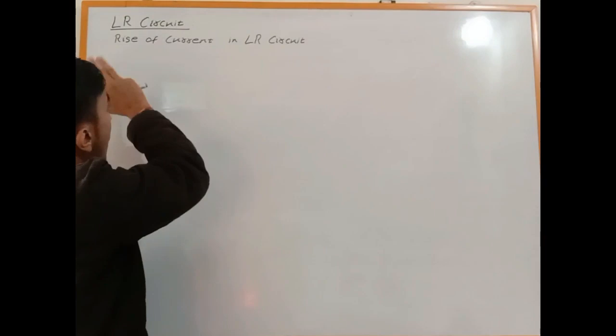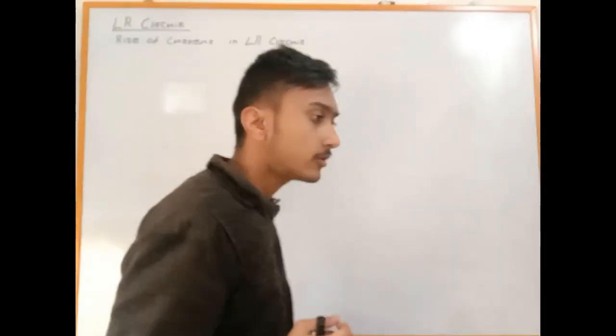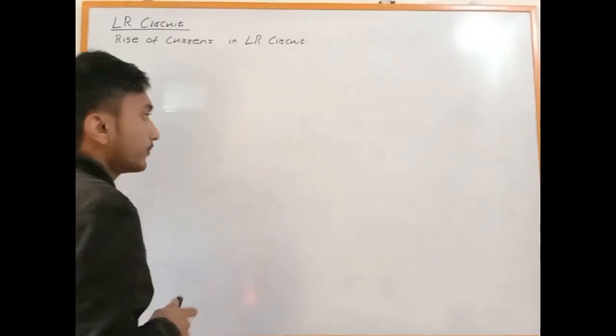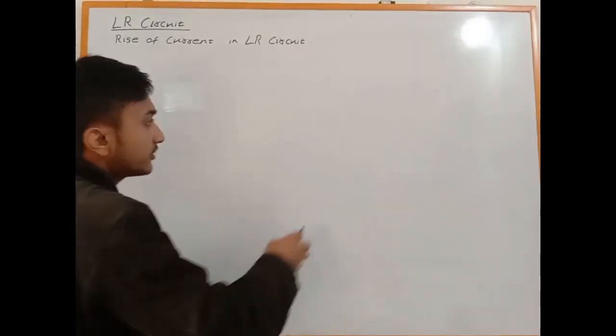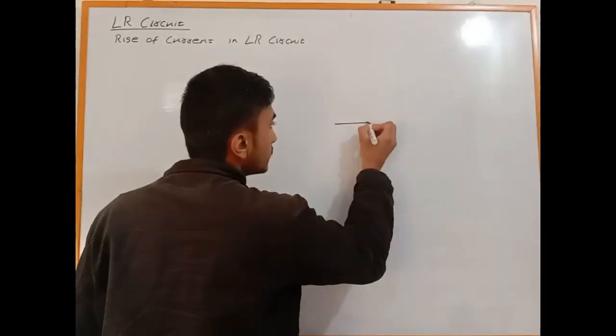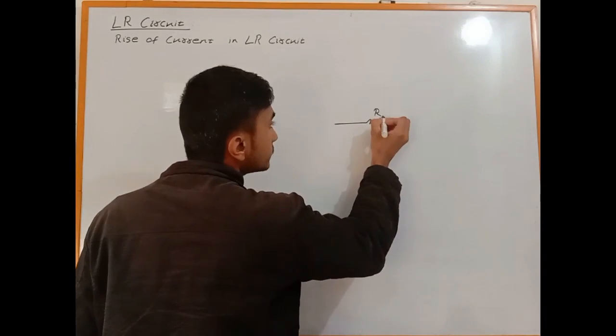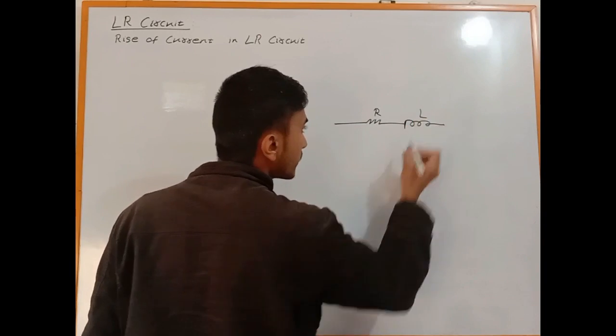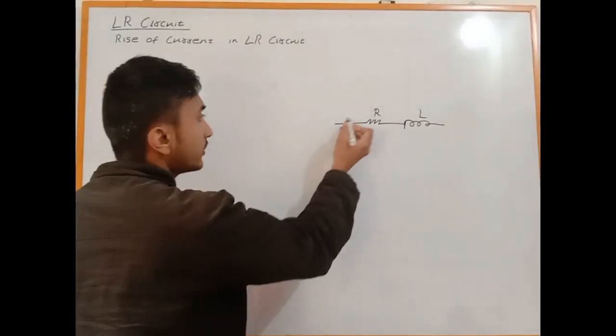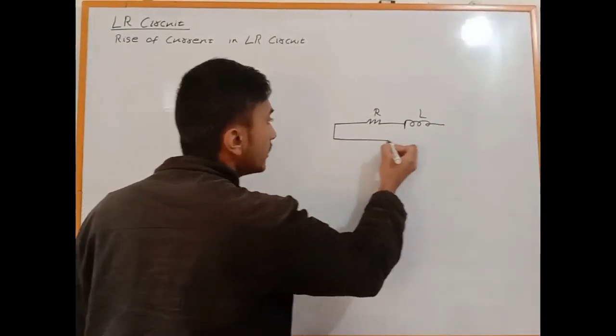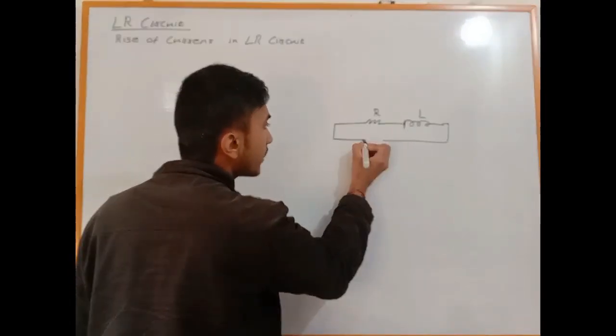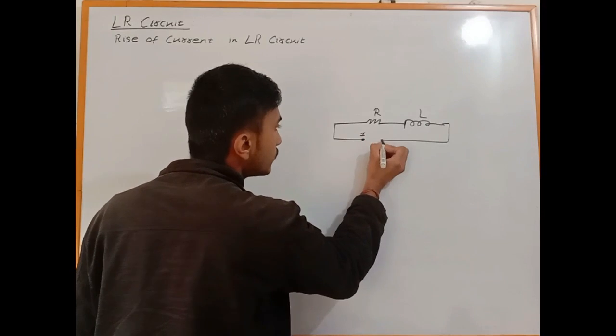In this video we'll focus on LR circuits, which consist of an inductor with inductance L and a resistance R connected in series. The inductor has inductance L and also some resistance.